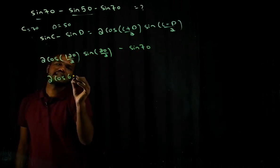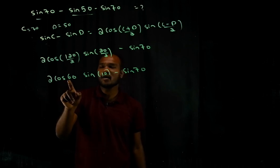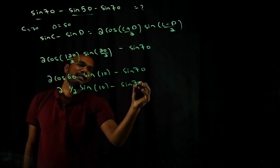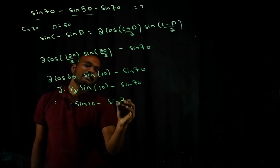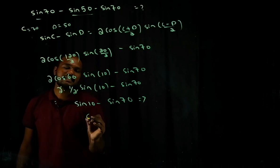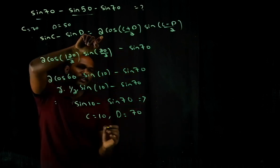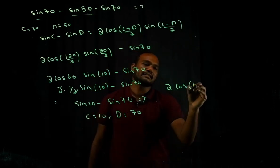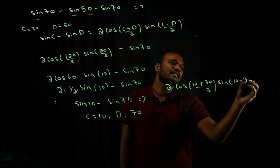cos 60° = 1/2, so 2 × 1/2 = 1. We get sin 10° − sin 70°. Applying the formula again with C = 10°, D = 70°: 2 cos((10+70)/2) · sin((10−70)/2) = 2 cos 40° · sin(−30°).